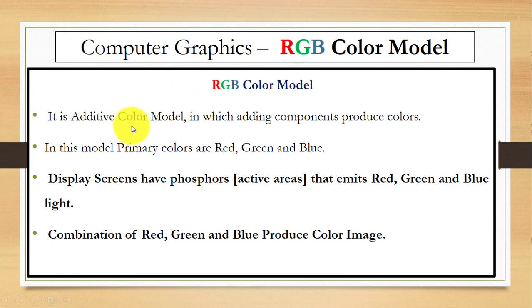So, this model is additive color model. As we discussed in the first slide, RGB color model is additive color model in which we are adding components to produce colors. In this model, we have three primary colors: red, green, and blue.